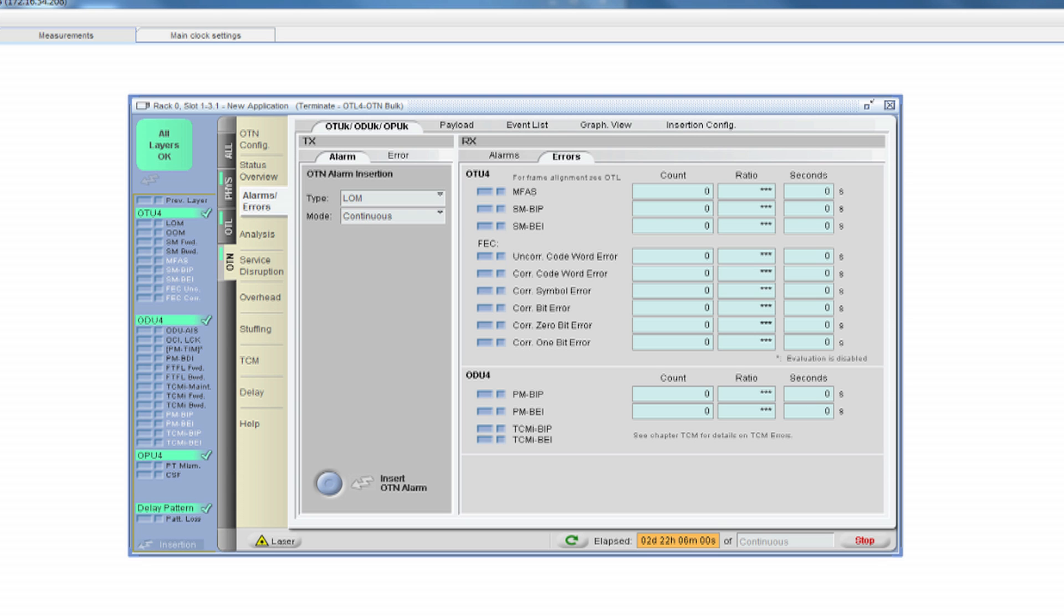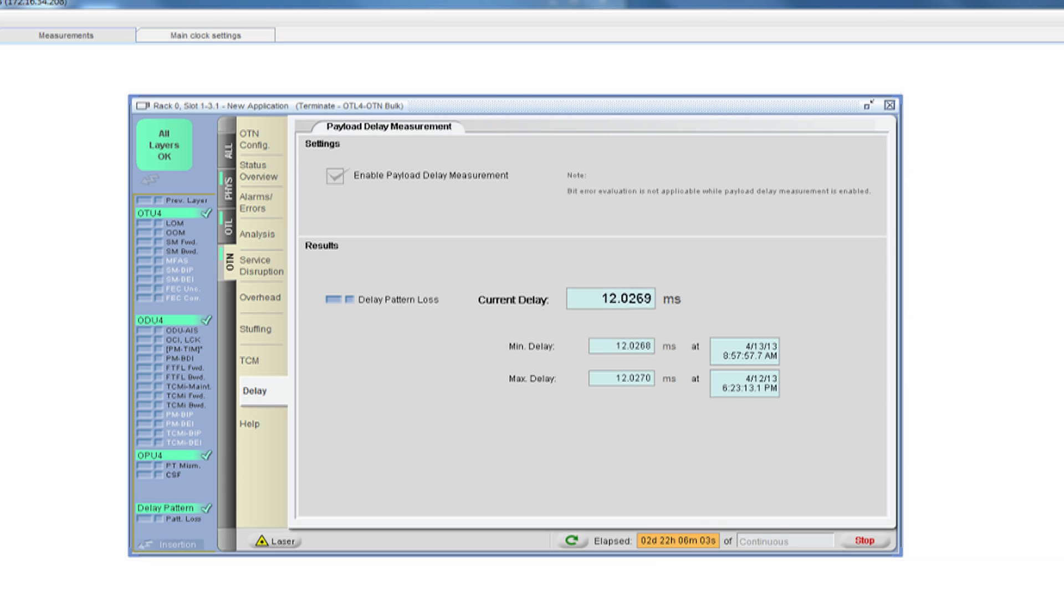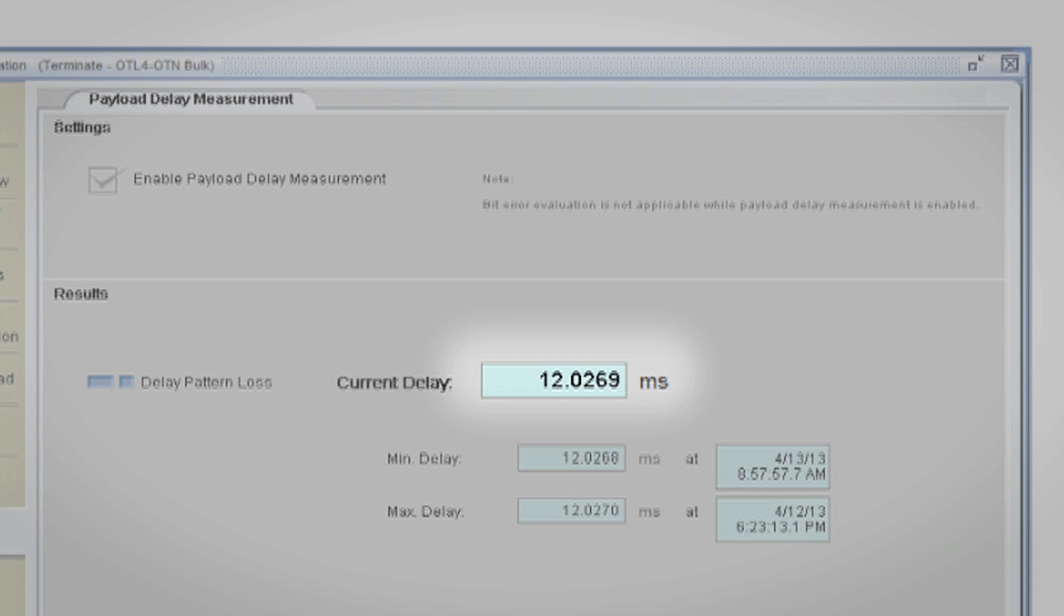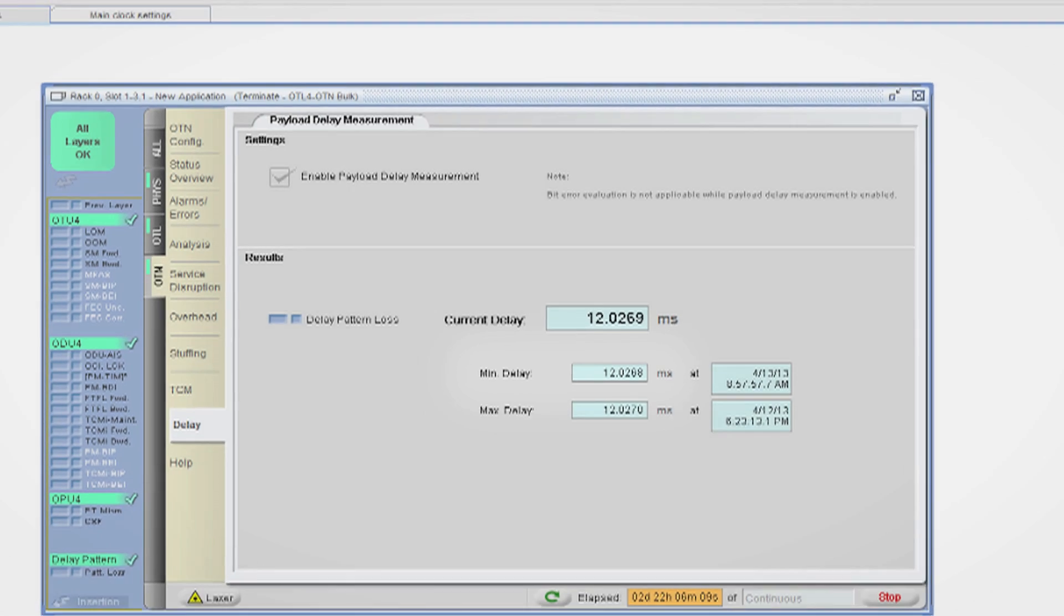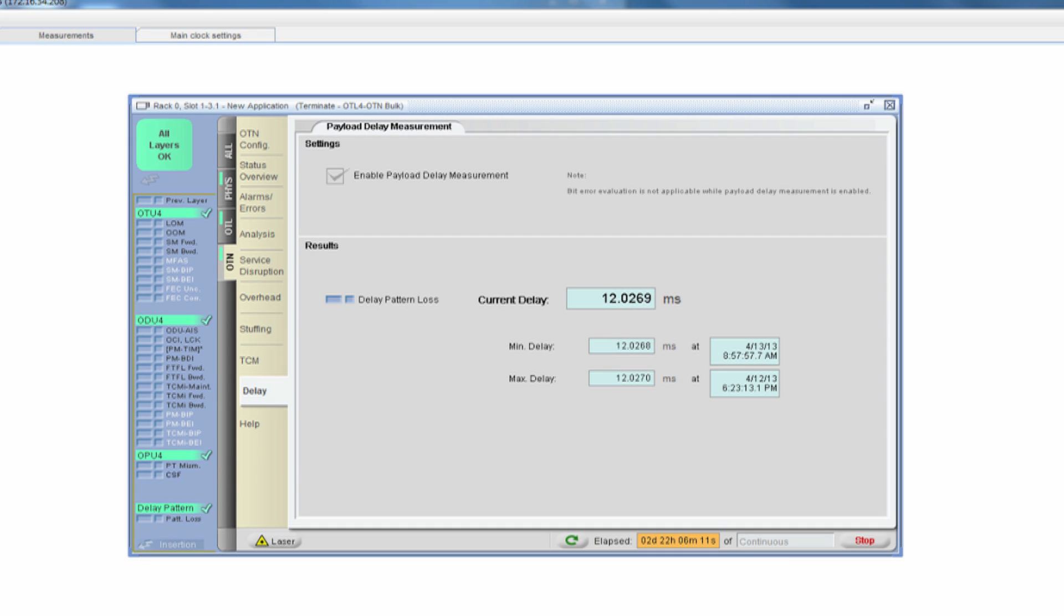Now if we switch the GUI to the latency measurement, you will see the latency number displayed here. And what this is indicating is really the distance that we're operating of 2,500 kilometers. One can easily calculate the fiber distance based on this latency number knowing the transmission velocity of light over typical single-mode fiber.